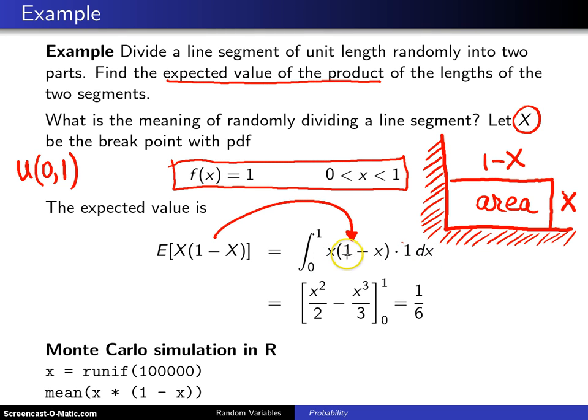Now what do we have here? We have x, and when that is integrated, it's x squared over 2. And then we have negative x squared. That'll give us a negative x cubed divided by 3. And those are evaluated from 0 to 1.